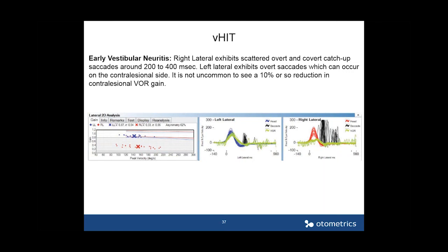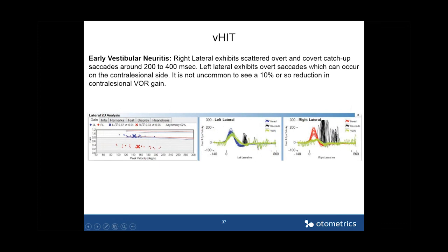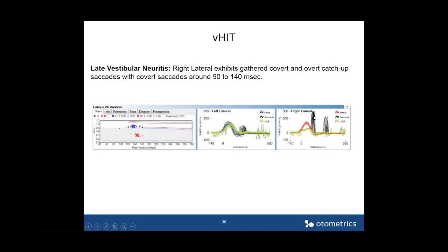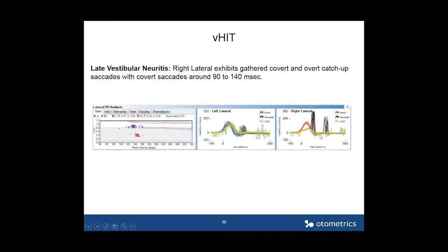In the same patient later on, the right lateral saccades — which were previously scattered across different milliseconds — start to cluster. You see covert saccades occurring around 90 milliseconds and overt saccades around 140 milliseconds. There's still a little disorder in the contralesional side, but the gain is starting to come up. As the patient compensates, saccades become less scattered and start clustering — a marker of improved compensation.